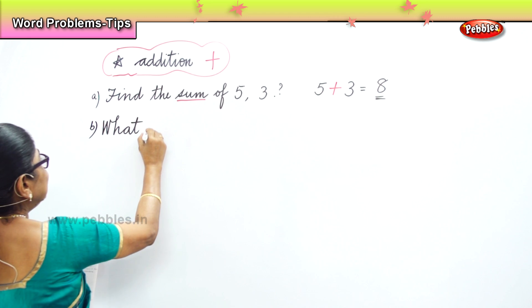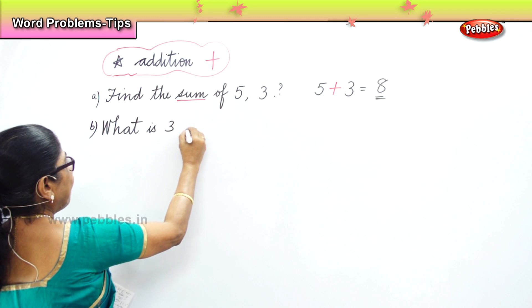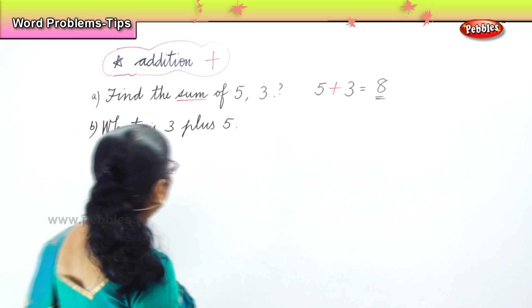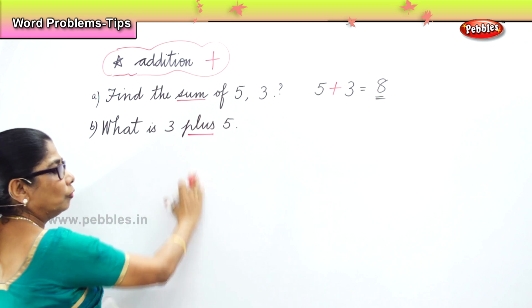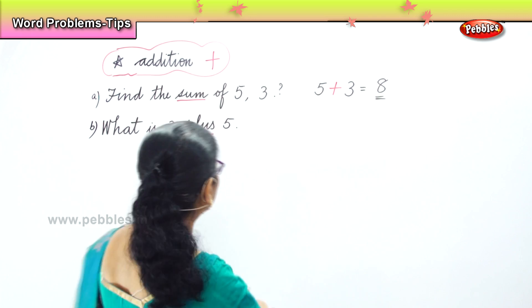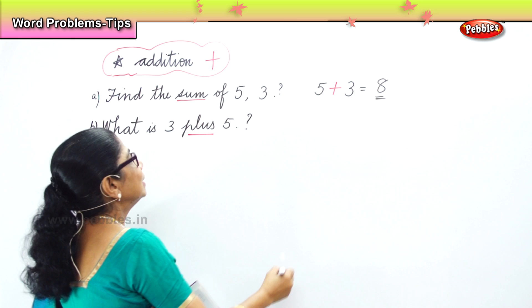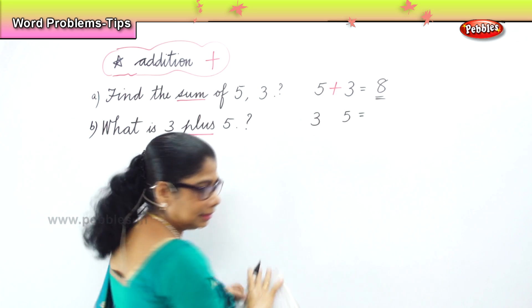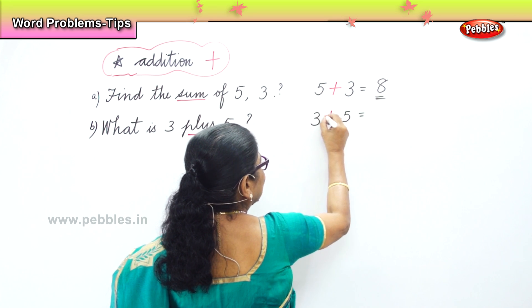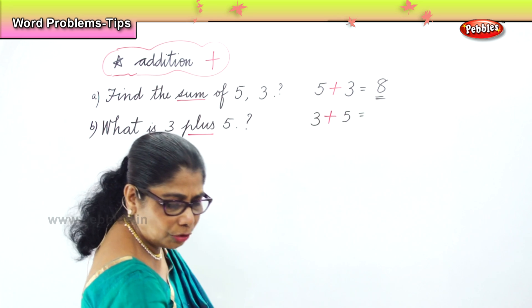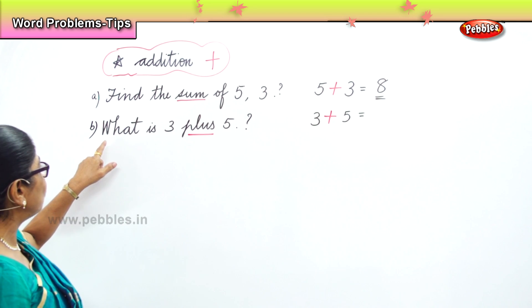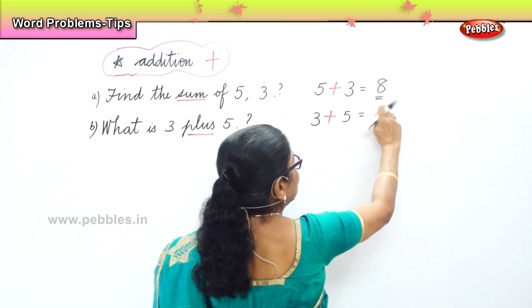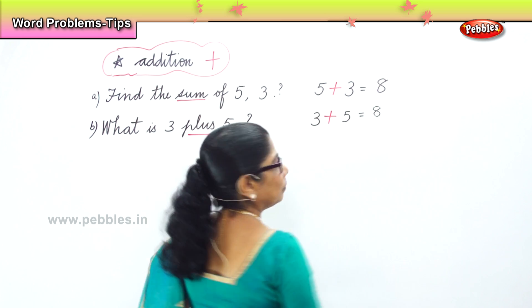Next small word problem. What is three plus five? I am underlining the word plus. When you say sum, it is addition. When you say plus, it is plus. So, what is three plus five? P-L-U-S — that's a plus sign. We need to remember: when you read, you must understand. What is three plus five? Three plus five is eight. Very good.